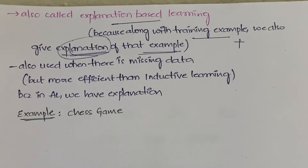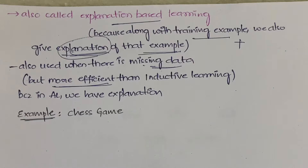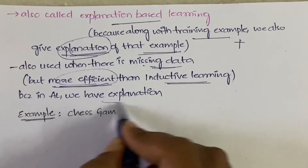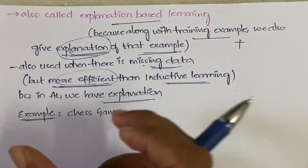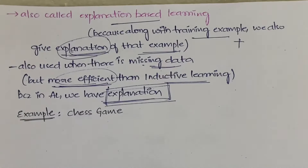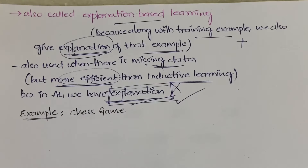Analytical learning can also handle missing data, redundant data, or errors in data. Compared to inductive learning, analytical learning is more efficient in these cases — because it has an explanation attached. Whenever data is missing or incorrect, it uses the explanation to handle it more efficiently, whereas inductive learning has no such explanation.